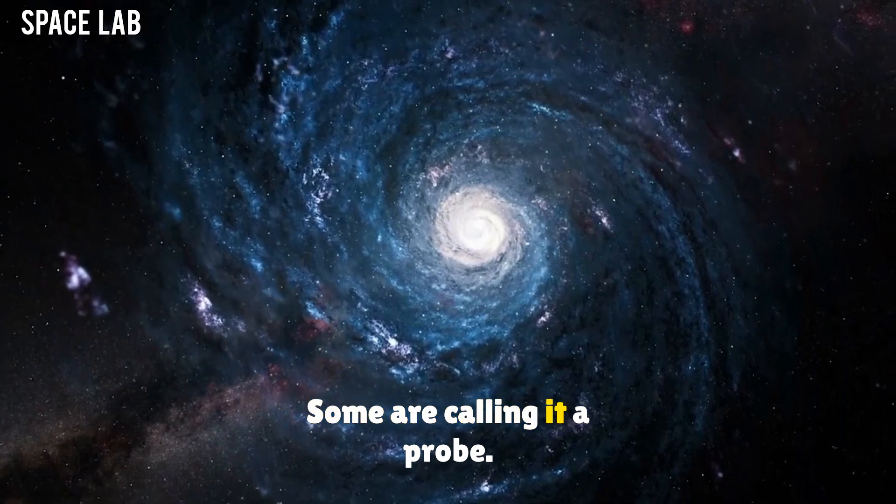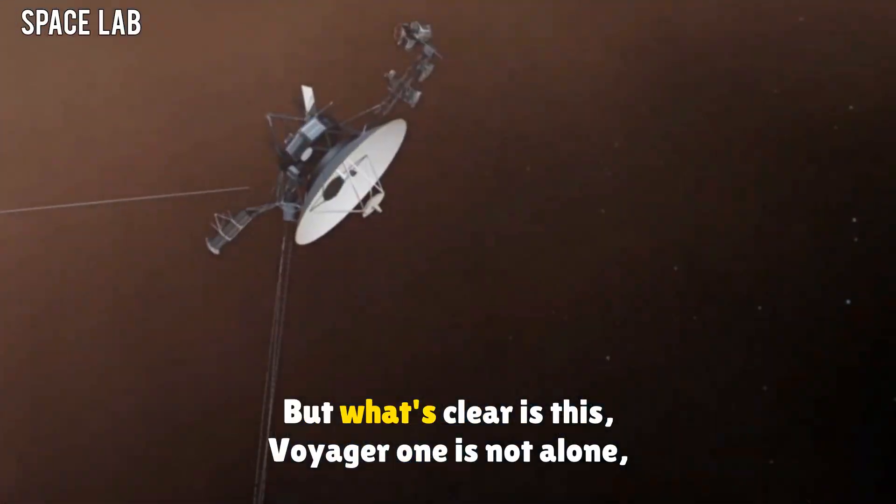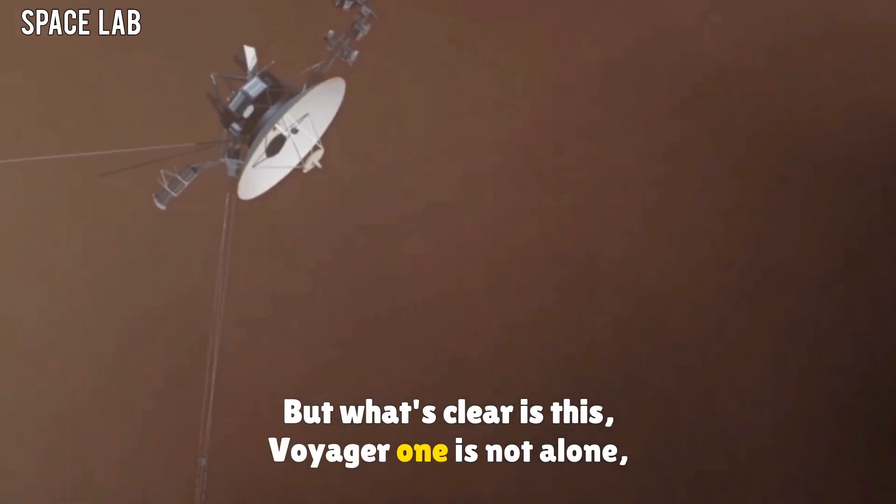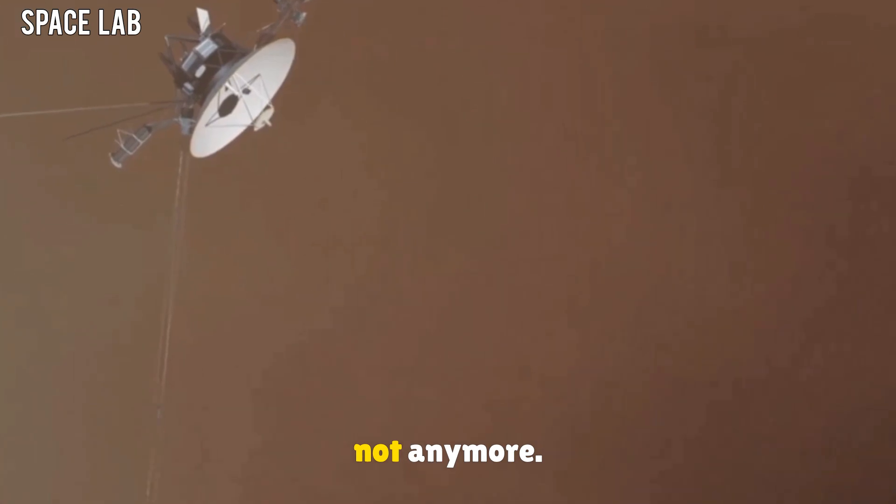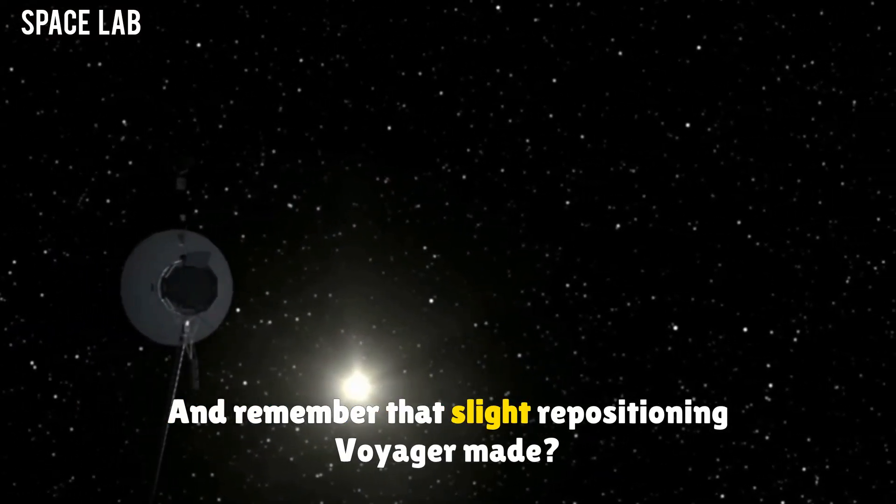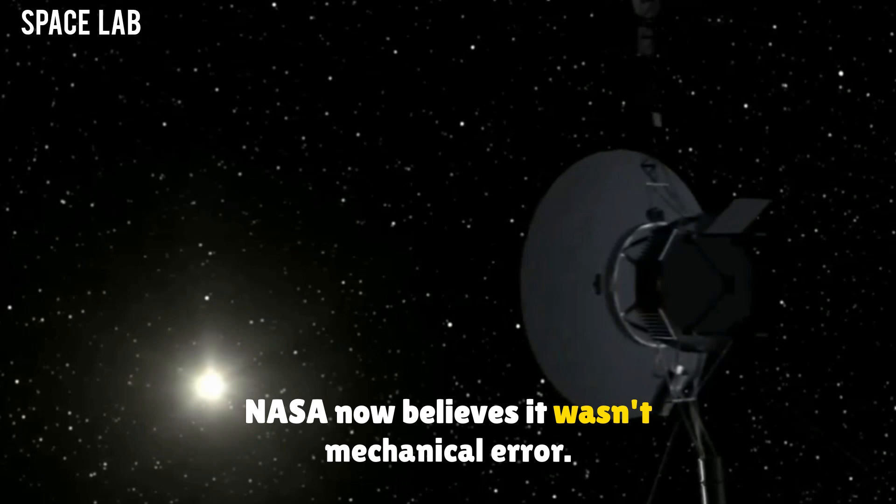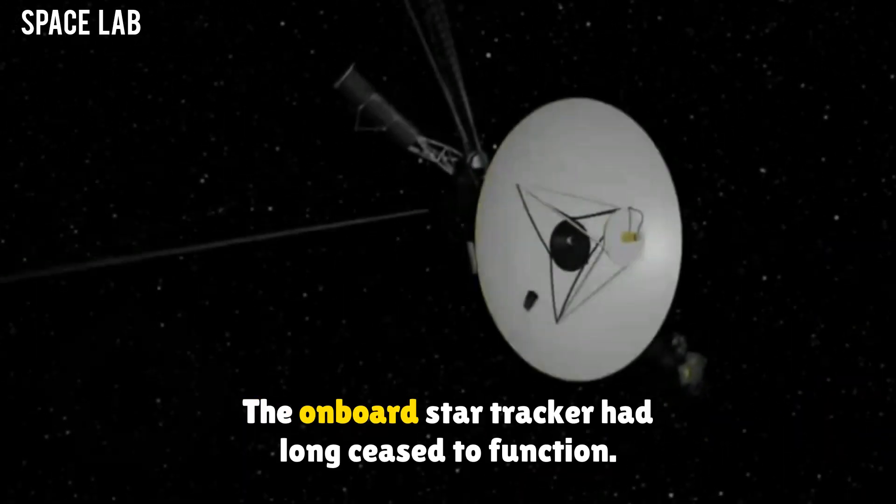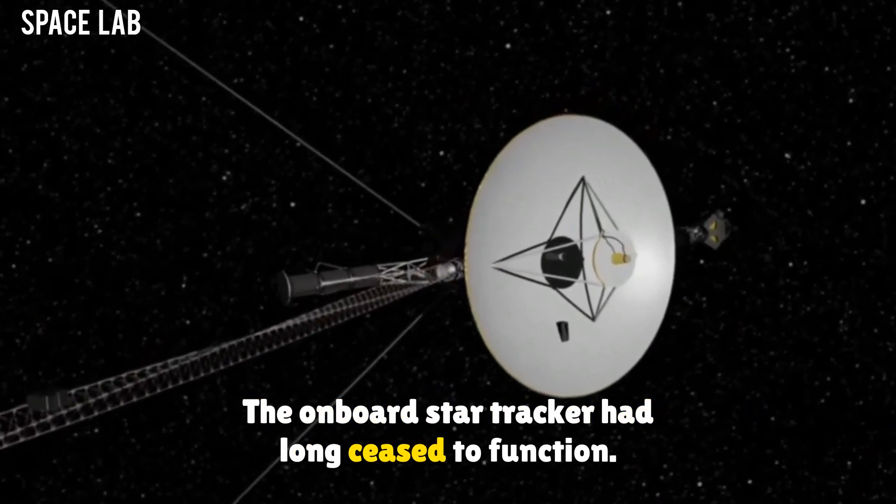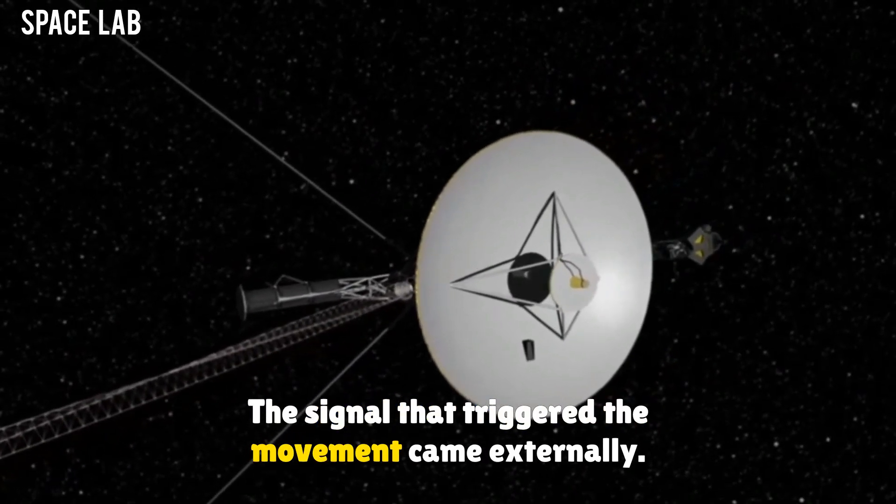Some are calling it a probe. Others think it's a sentinel. But what's clear is this: Voyager 1 is not alone. Not anymore. And remember that slight repositioning Voyager made? NASA now believes it wasn't mechanical error. The onboard star tracker had long ceased to function. The signal that triggered the movement came externally.